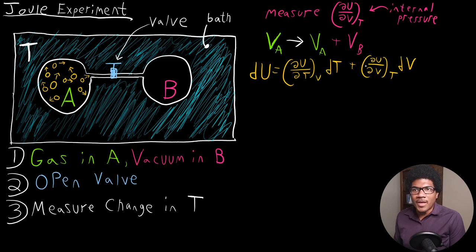So now this is the derivative that we're after. This internal pressure derivative is what we're trying to measure. We can also have another expression for dU from the first law of thermodynamics. So we'll have dU is equal to dQ plus dW.